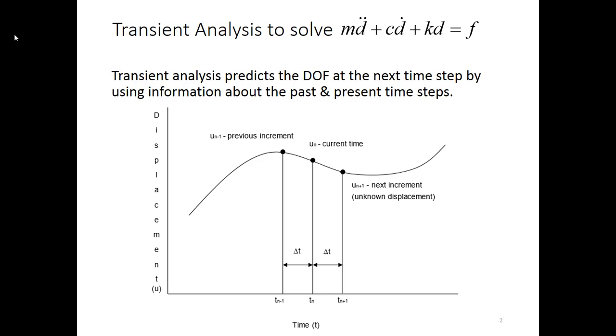And then what I'm trying to do is predict what's happening at the next time step, the UN plus 1, that's currently unknown. We have delta T in between each one of our time steps. That delta T can vary, although it often remains consistent for a long period of the analysis.